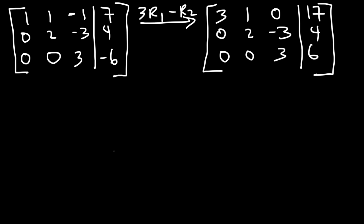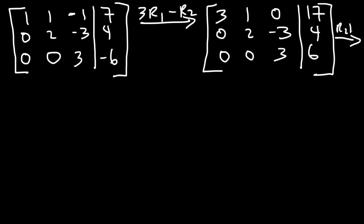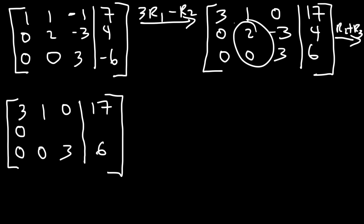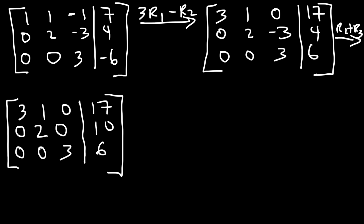Now I need to make the remaining off-diagonal entry in row 2 a 0. I just need to add rows 2 and 3 and apply it to row 2, performing R2 plus R3. Row 1 and row 3 do not change. 0 plus 0 = 0, 2 plus 0 = 2, negative 3 plus 3 = 0, and 4 plus negative 6 = negative 2. A simple copying mistake earlier — it's negative 6, not positive 6.